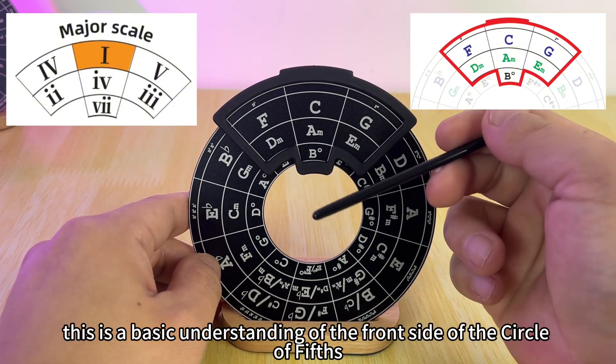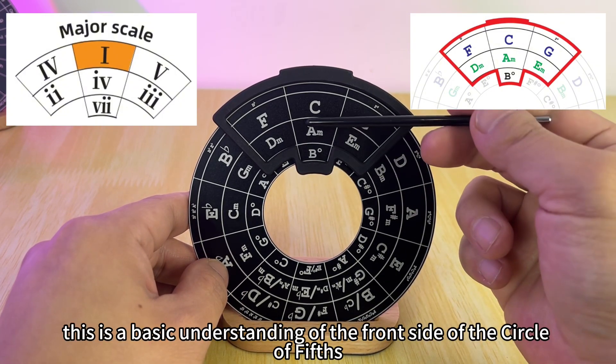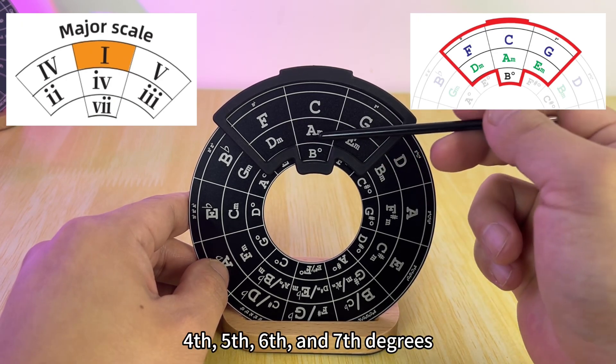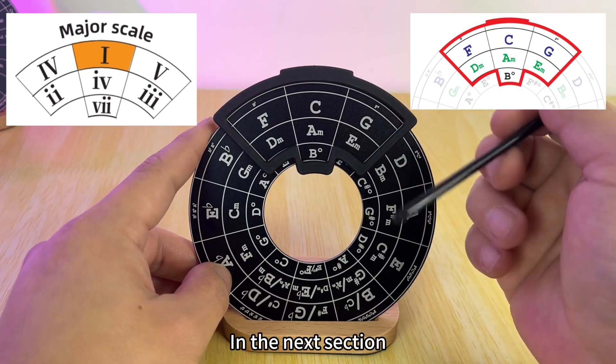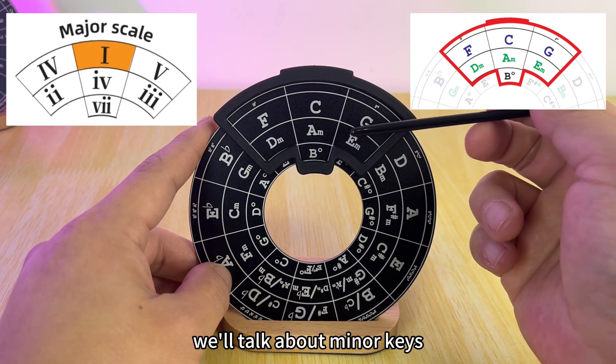Well, this is a basic understanding of the front side of the circle of fifths, with the first, second, third, fourth, fifth, sixth, and seventh degrees. These are the chords of the C major key. In the next section, we'll talk about minor keys.